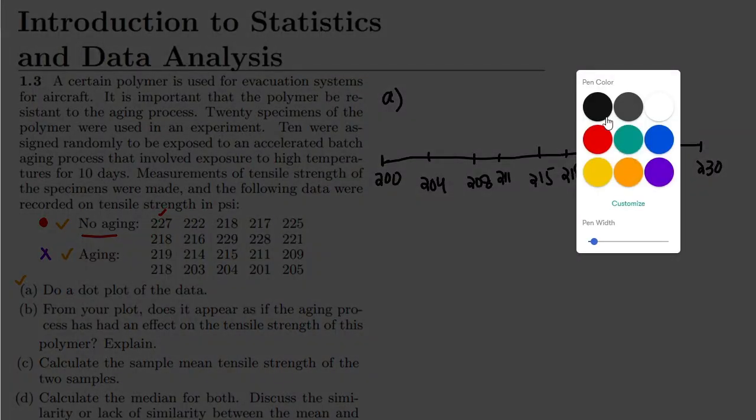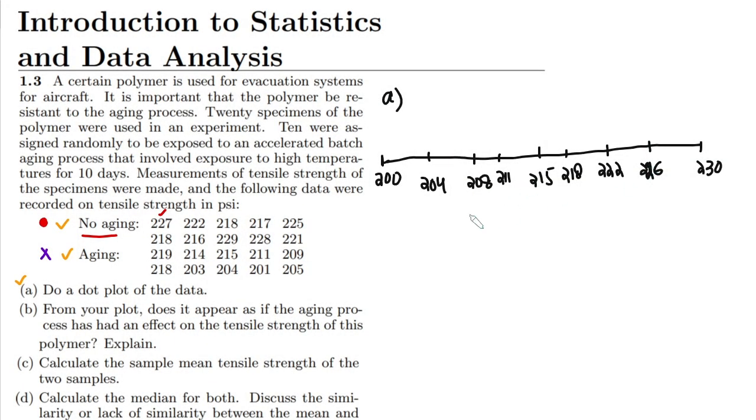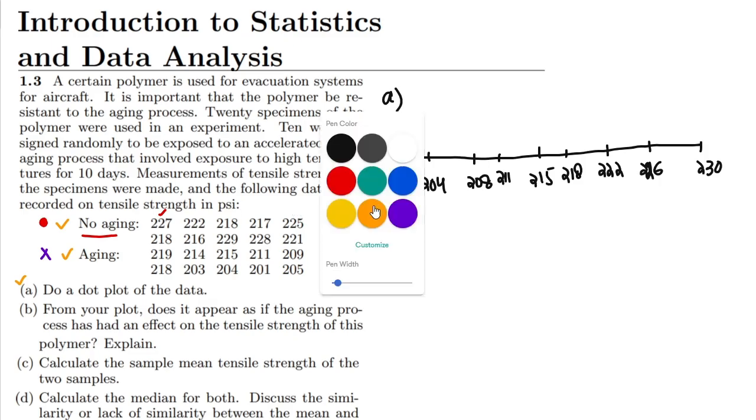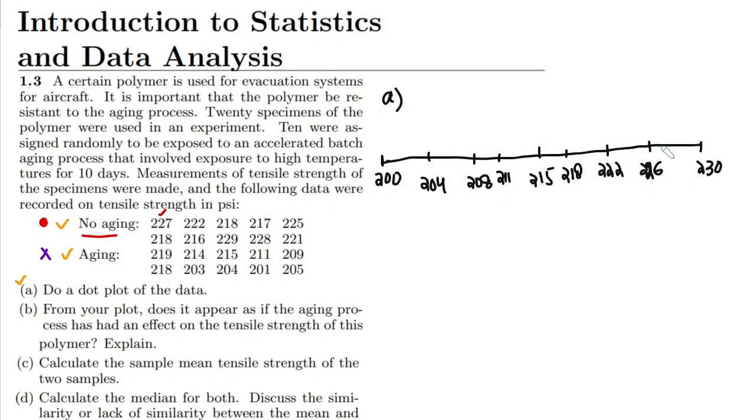The first point here I have is 227. So the first data I have is 227, let me have it. This is 227. The second one is 222, this is here. The third one 218, this is here. 217, let me have it here. And then 225, so 225 is somewhere here.